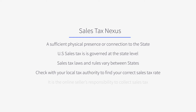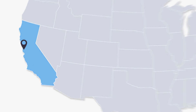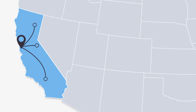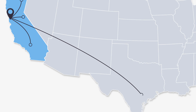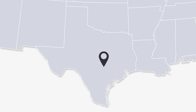Check with your local taxing authority to find your sales tax rate. As an online seller, it's your responsibility to charge your buyers the correct amount of sales tax and remit that tax collected back to the state. For example, if you have nexus in California, all orders that are shipped within the state will be charged sales tax. If an order ships to Texas, where you don't have a connection to the state, you do not need to collect sales tax. If you were to open a branch of your business in Texas, then you would have nexus with the state and would begin collecting sales tax for Texas.